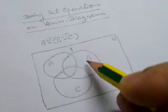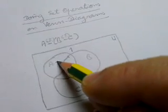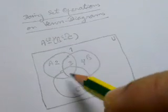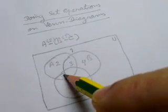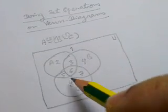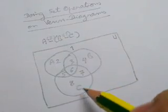Region 1 is the universal set outside ABC. Region 2 here, region 3, region 4, 5, 6, 7, and 8. Three sets divide the whole universal set into 8 regions.